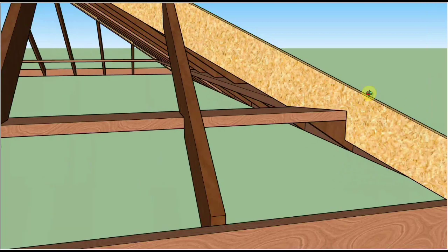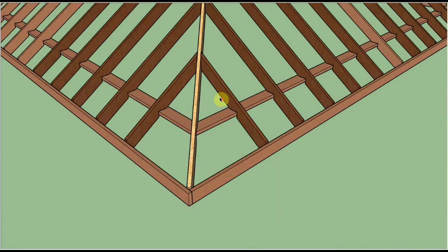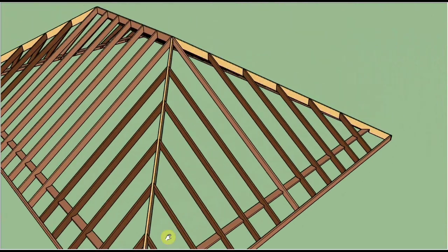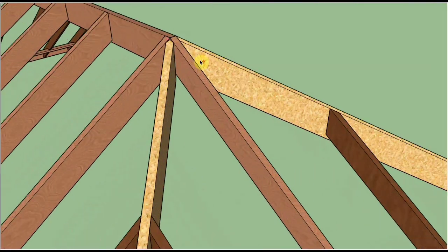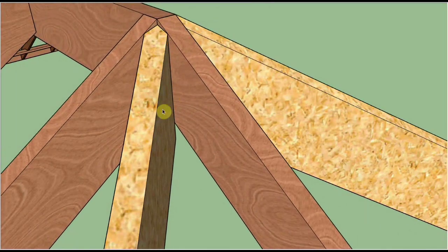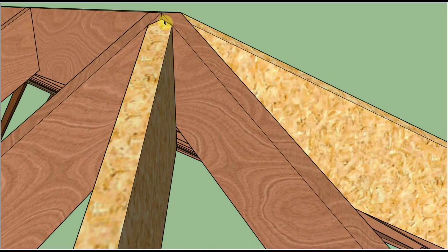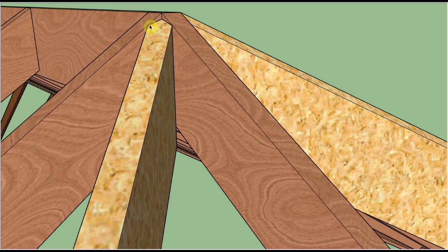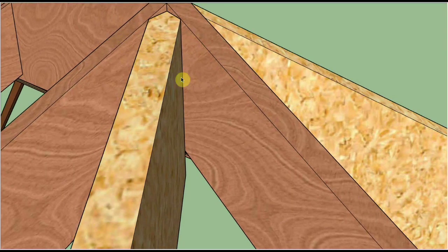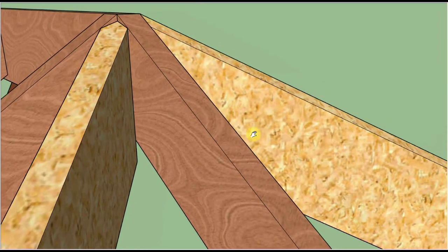Now when we look at the top plumb cuts of the hip rafter, we'll see that the center is now too low but the edges are nicely in plane. The edges are running right into the same height as the common rafters on each side of the hip rafter. That means when the plywood or sheathing comes across the common rafters, it's going to be nicely supported by the edges of the hip rafter.